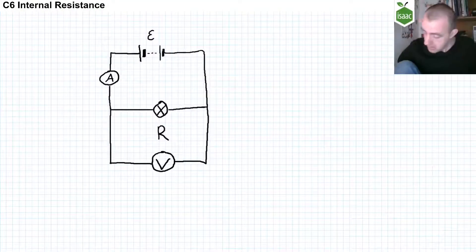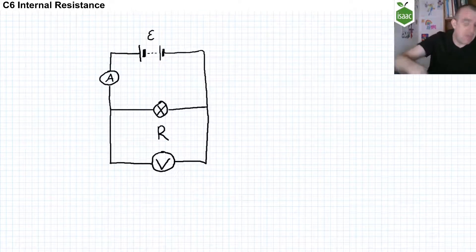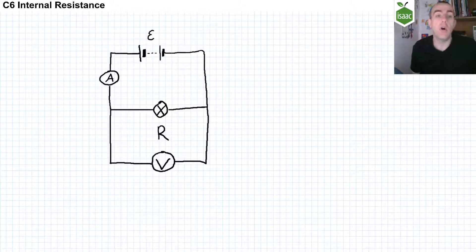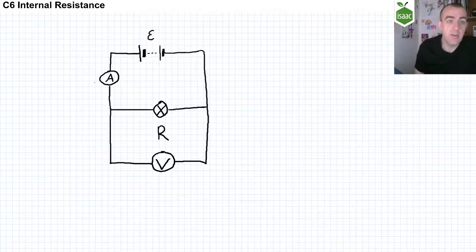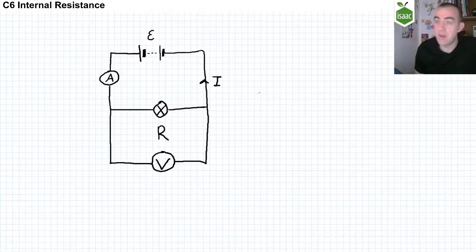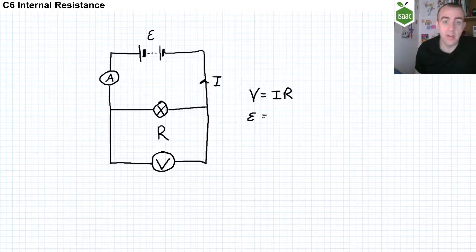This video is about internal resistance. Here is a circuit with a power supply that has a potential difference across the terminals of epsilon. There is an ammeter in series with the lamp, measuring the current I. The lamp has a resistance R, so the current in this part of the circuit is also I. We can say that V, the potential difference across the lamp, is equal to IR, and also that epsilon is equal to IR.